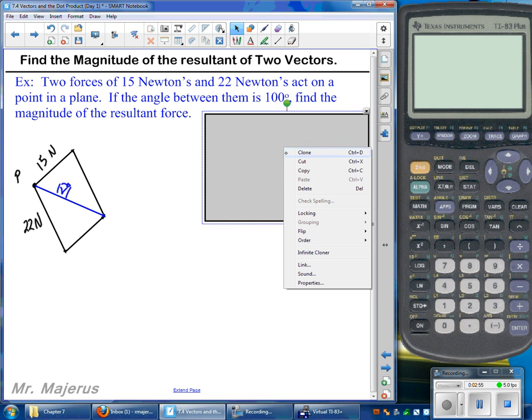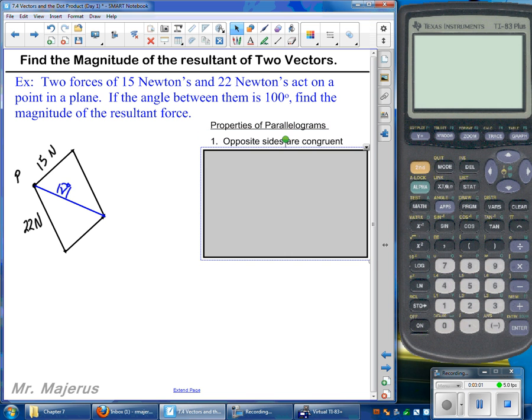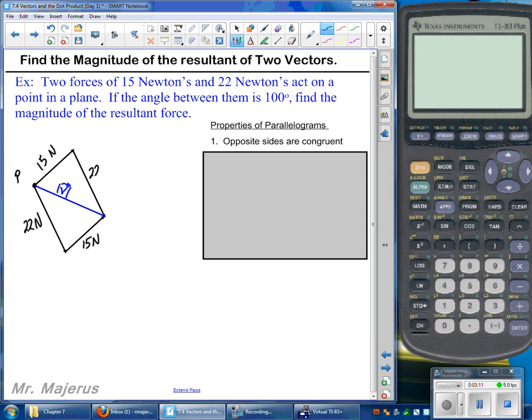So think back to your geometry class, and some of the properties of parallelograms we're going to want to remember are the fact that opposite sides are congruent. So in our drawing, that would mean that this one down here would also be 15 newtons, and this one up here would be 22 newtons.